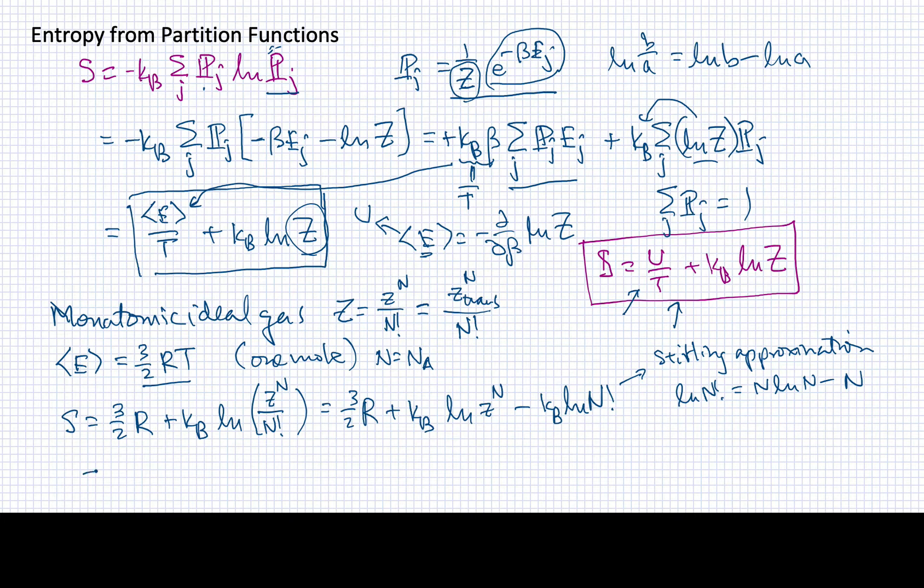In the end, I'll have here that this is equal to three halves R plus n KB, but I said n is going to be the Avogadro's constant, so Avogadro's number times the Boltzmann constant is just R.